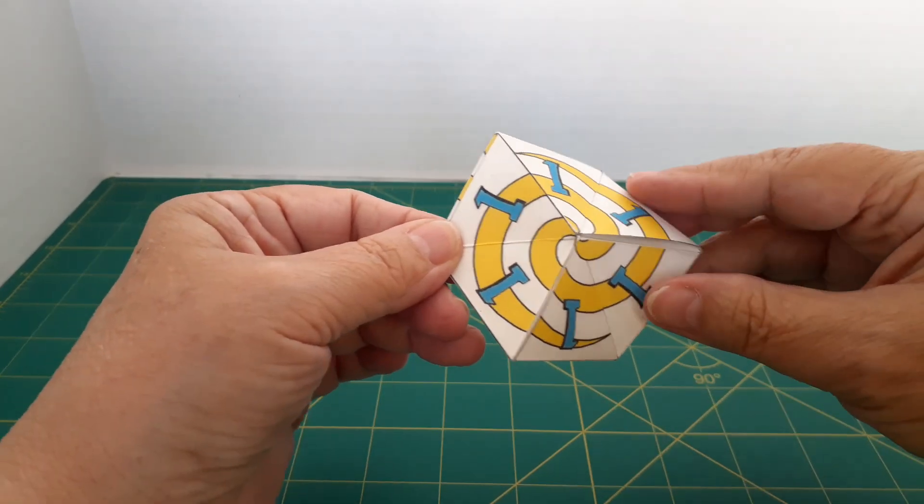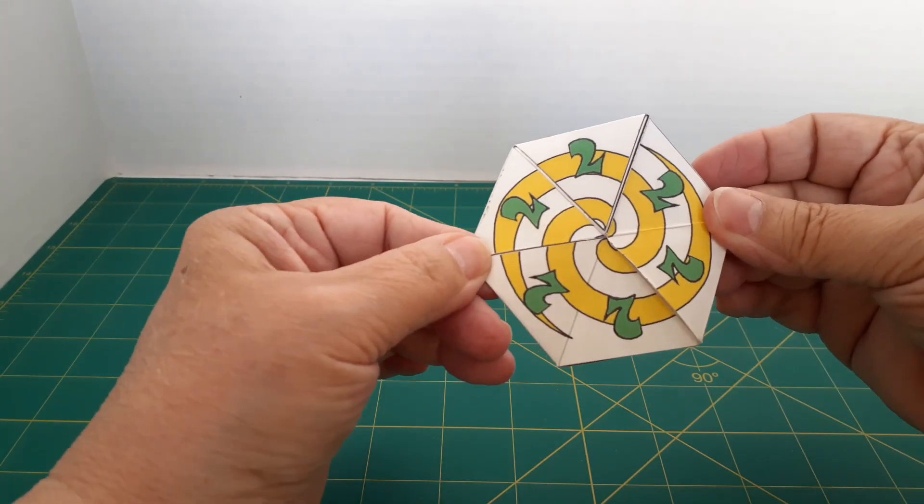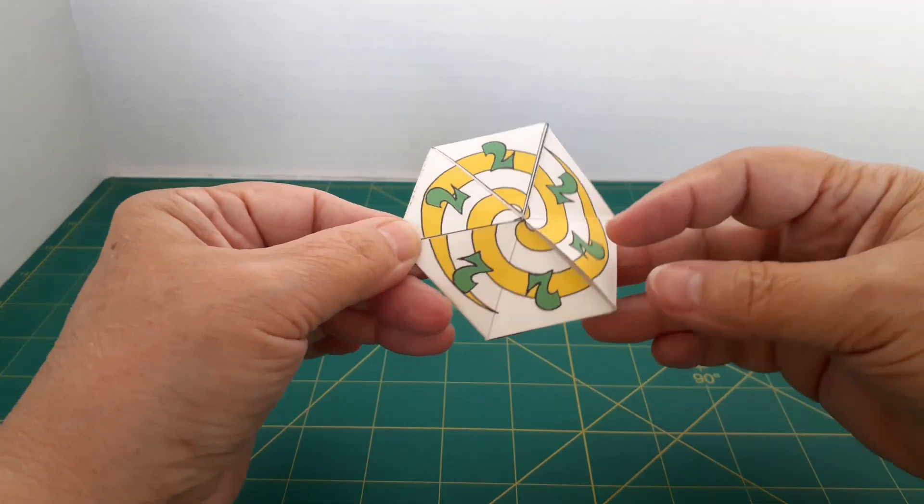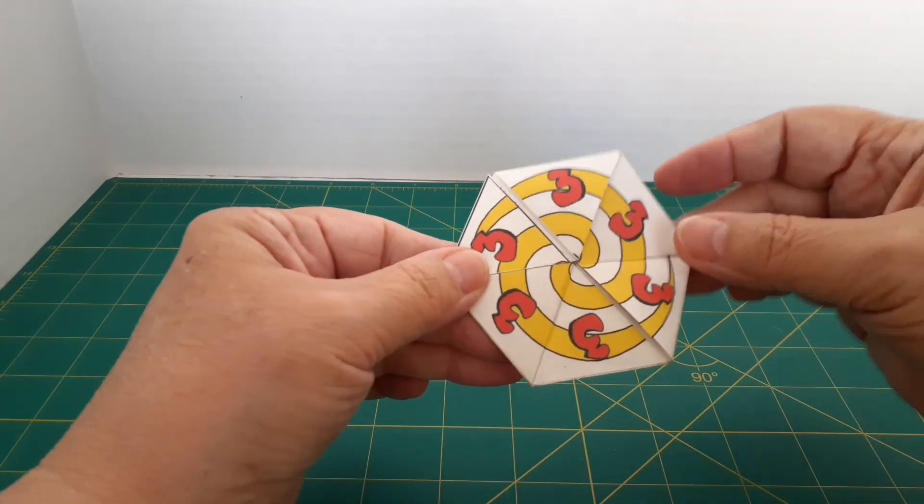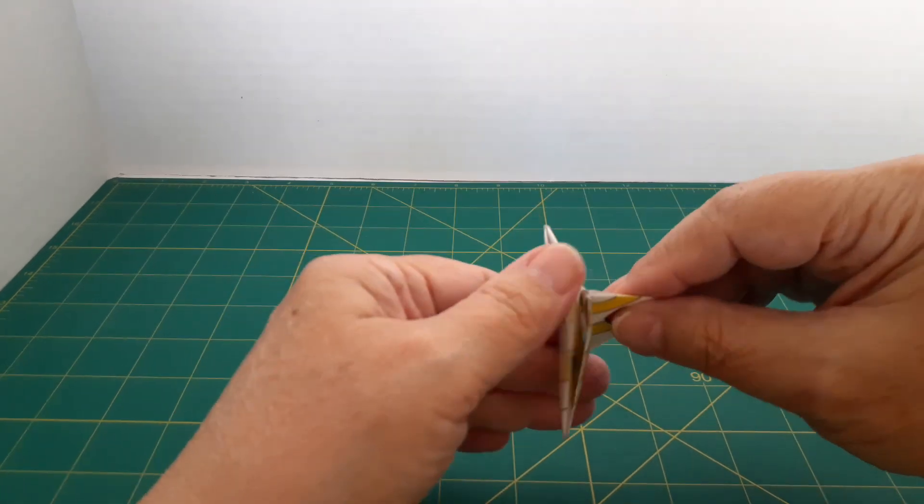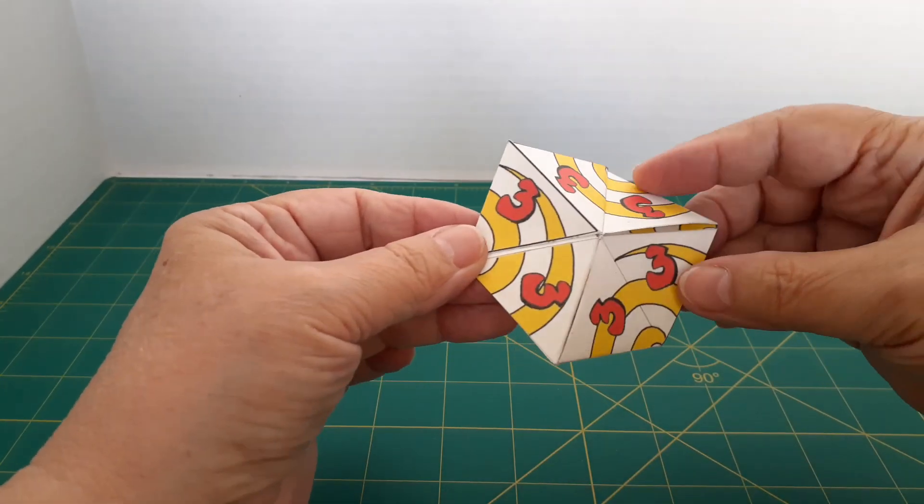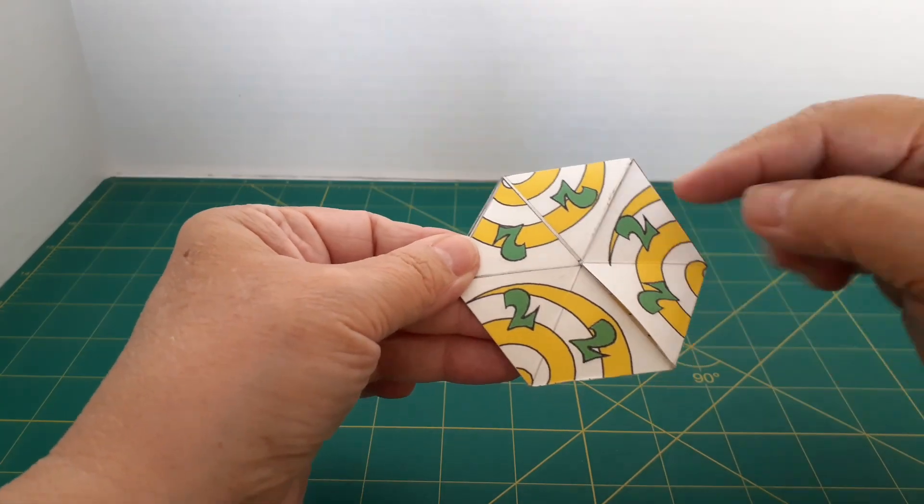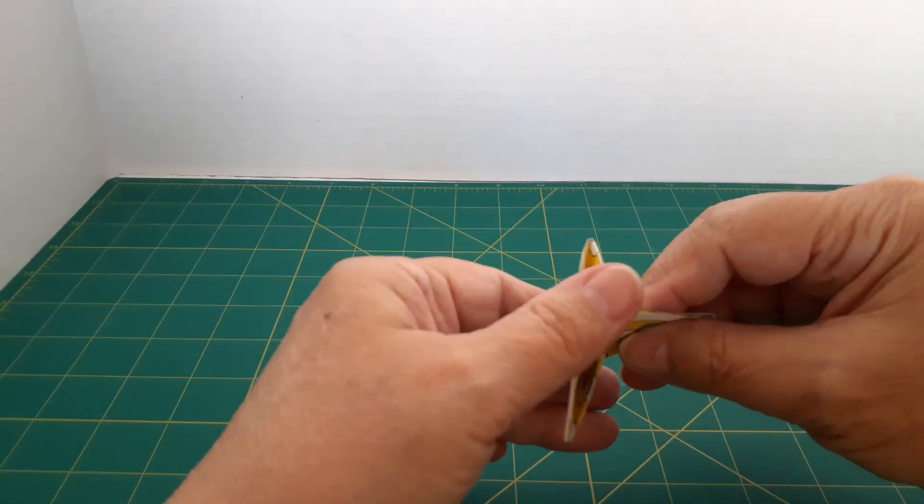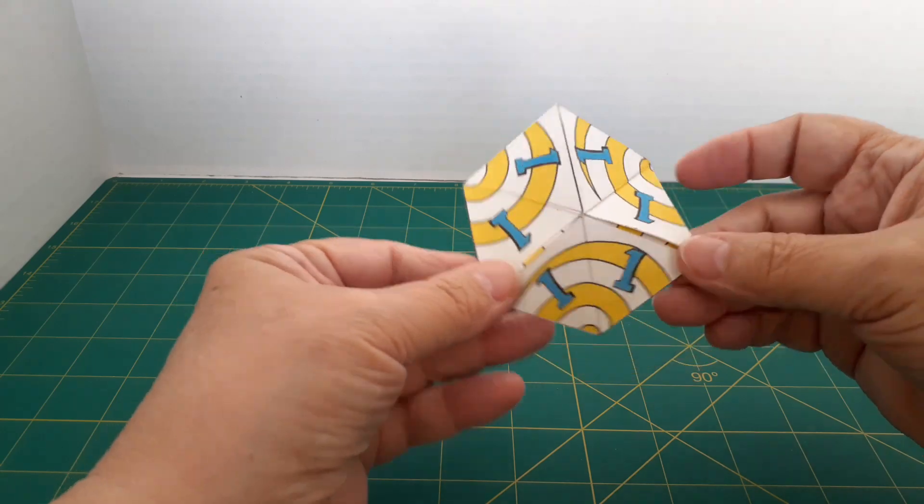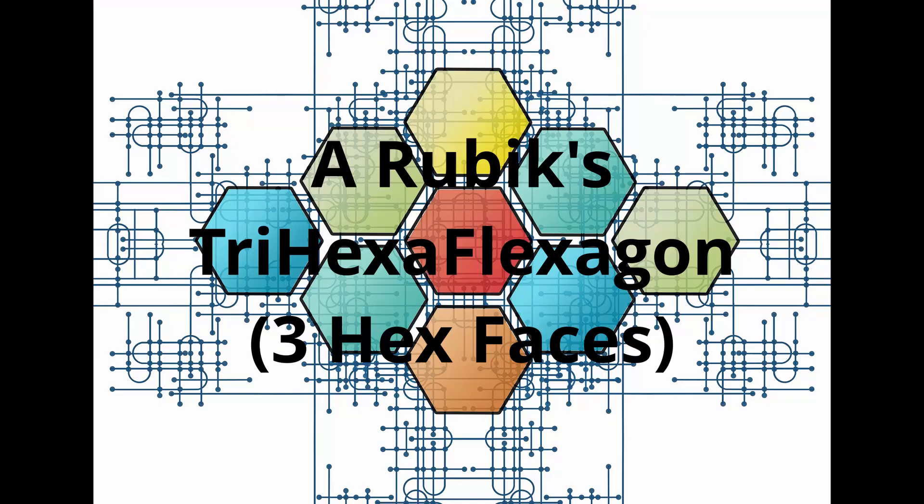This trihexaflexagon has numbers and spirals. Notice how right now the spirals are going like they should on one, two, and three. But if I flip, we'll see that the spirals are still there but obviously they're now pointing out and they do spin around, but you can't tell. So here's another one that's just a Rubik's cube.